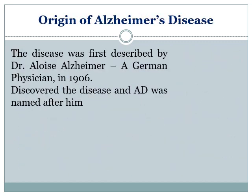Now, the origin of Alzheimer's disease. This disease was first identified and described by a German physician, Dr. Alois Alzheimer, in the year 1906. He discovered this disease first, so the Alzheimer's disease was named after him.